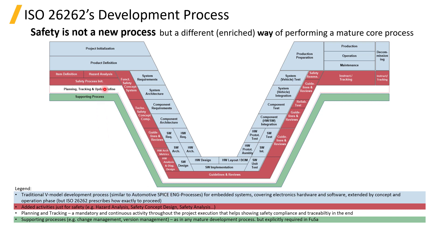The white color represents planning and tracking, which is a mandatory and ongoing activity throughout the project execution. This activity demonstrates safety compliance and ensures traceability by the end of the project. The green line represents supporting processes like change management and version management, which are an integral part of many mature development processes, but explicitly required in functional safety.